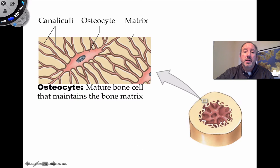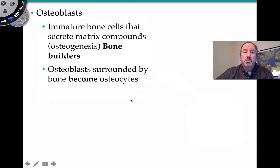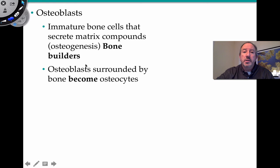The osteocyte is your typical mature bone cell found here in the compact bone in the lacuna. Here are the canaliculi canals that connect osteocytes, and here's the matrix made up of calcium matrix and protein matrix. Osteoblasts are immature cells that will secrete and build bone — you can think of them as bone builders. As they build bone, the osteoblasts themselves get surrounded by the matrix, and they become the osteocytes, which are the mature bone cells.